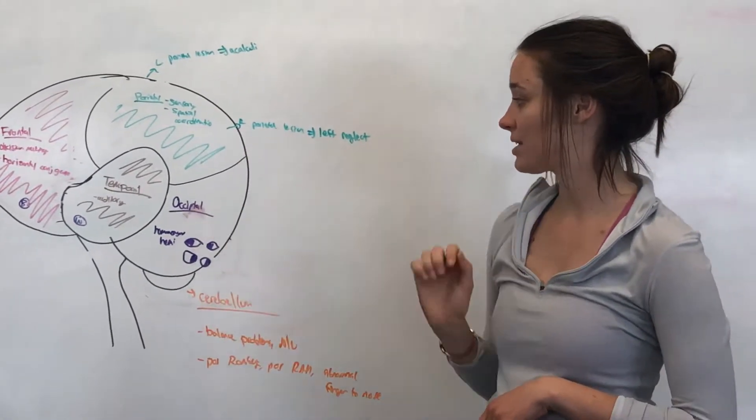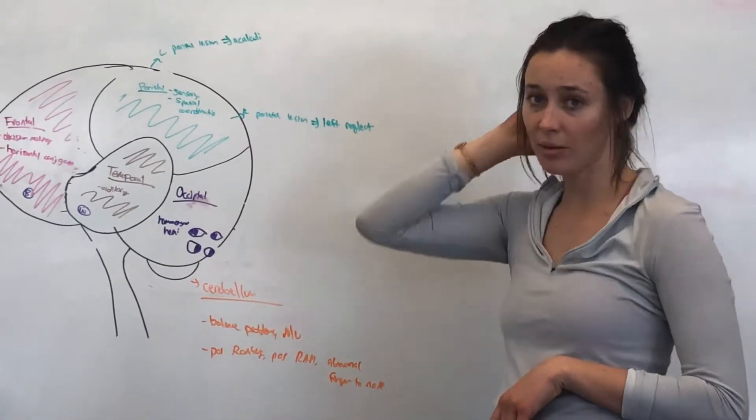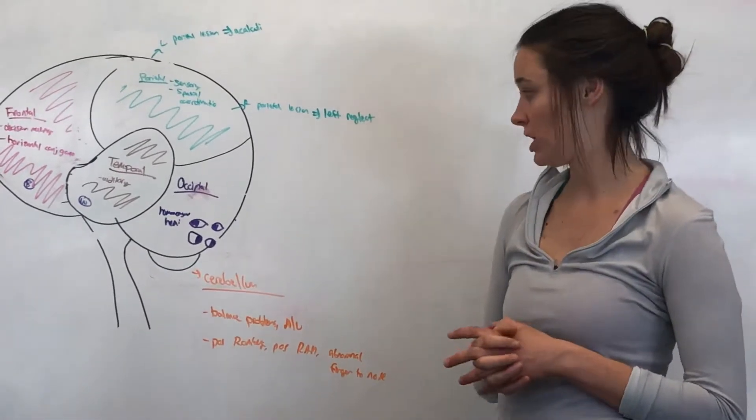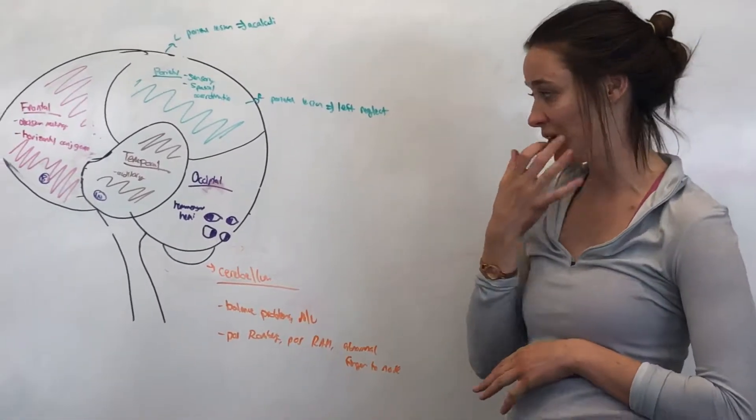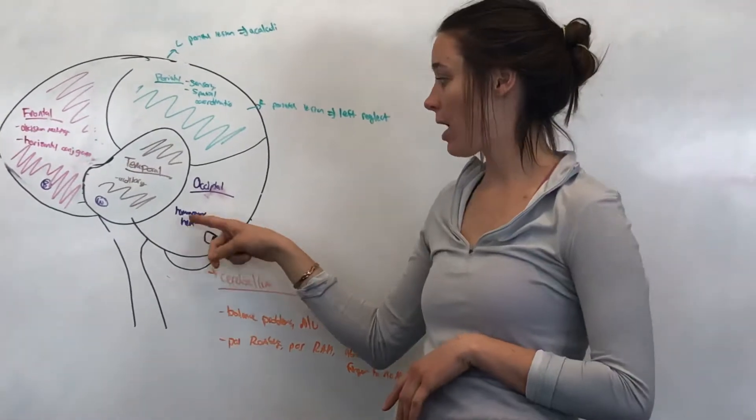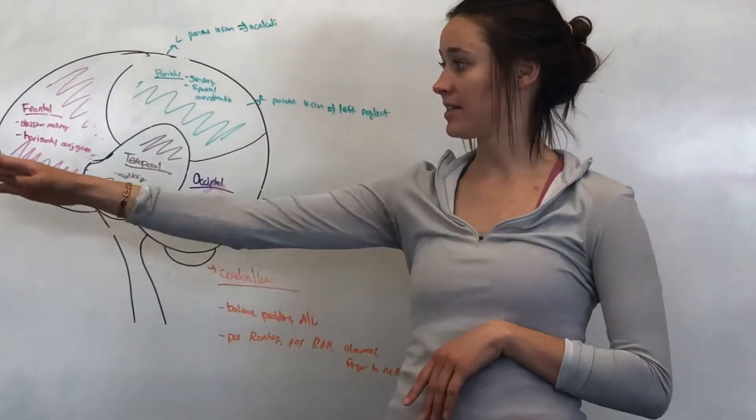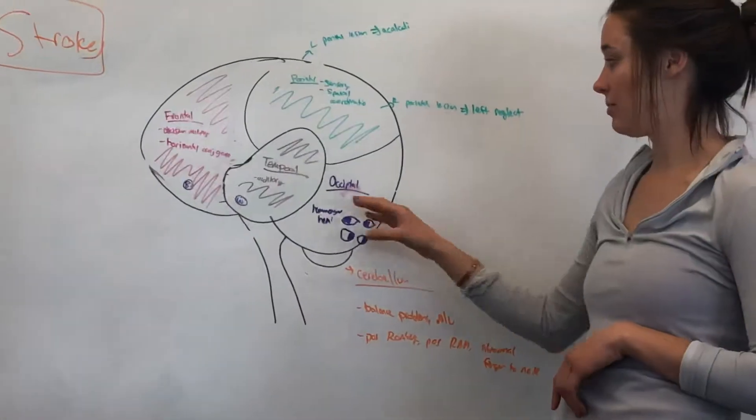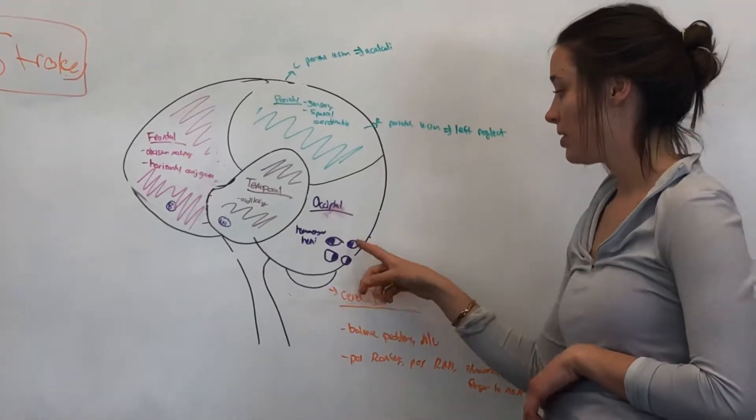So moving on from parietal to occipital. Occipital is the back of our brain. It's responsible for a lot of our vision. So if you have a stroke or lesion here, what you're going to see is homonymous hemianopsia. That ties into kind of the PCA, vascular to the occipital lobe.